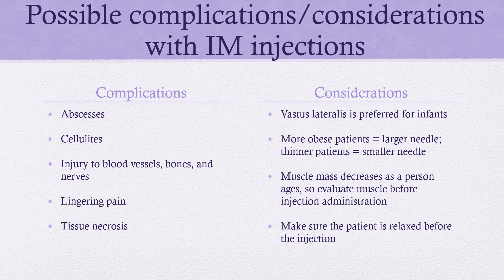Different complications we have to think about with IM injections include abscess and cellulitis — for more obese patients, make sure you're using a larger needle. We could also injure a blood vessel, bone, or nerve. Patients could experience lingering pain or tissue necrosis. These are possible complications if we don't give IM injections correctly, making it really important to administer them properly.